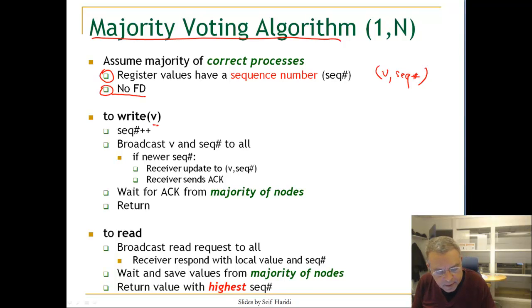Here is the write operation. To perform a write, the writer, which we have only one anyway, increments its sequence number, which is initially zero. It broadcasts the value V and the sequence number to all nodes. Now the receiving nodes will do the following.